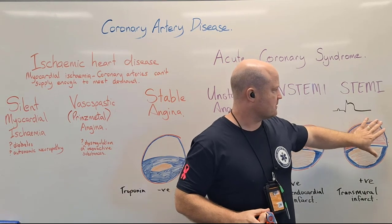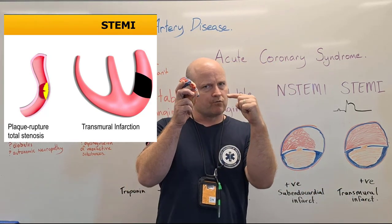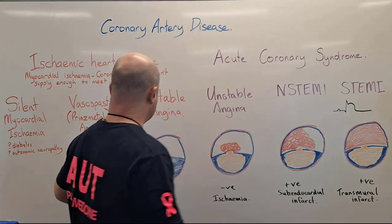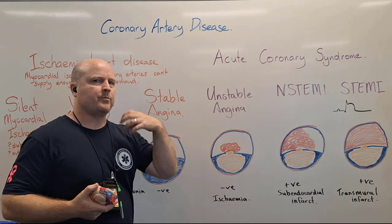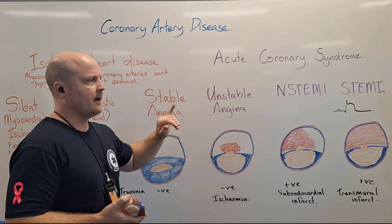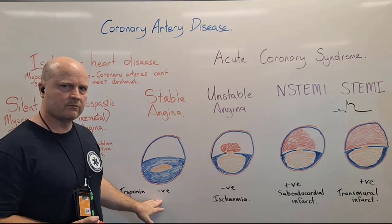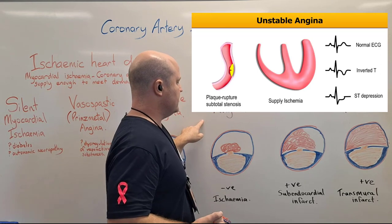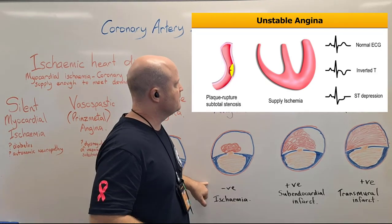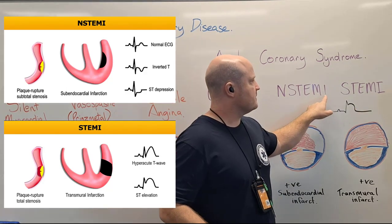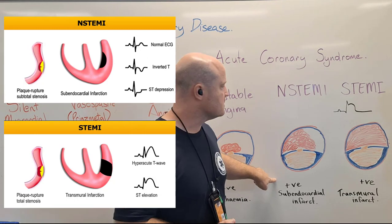With a STEMI — ST elevated myocardial infarction — there is a full occlusion, so we get a transmural infarct, meaning the death goes right through the full wall of the heart. The ST and non-ST distinction relates to the ECG: a non-STEMI won't show ST elevation, whereas a STEMI will show the ST portion of the wave elevated. Another key marker is troponin — when cardiac tissue infarcts, the body releases troponin into the bloodstream. With stable angina and unstable angina there's no cell death, so no troponins are released. But with NSTEMI and STEMI there is infarction and tissue death, so troponins will be elevated in the blood.